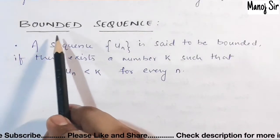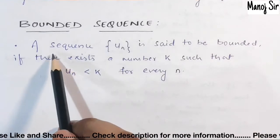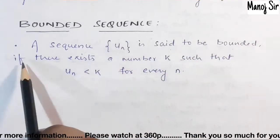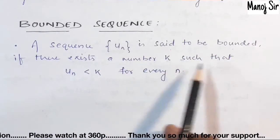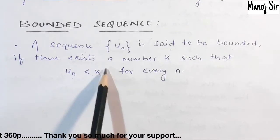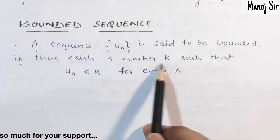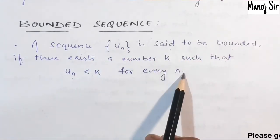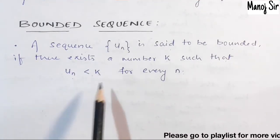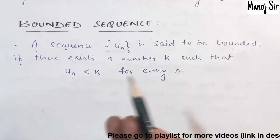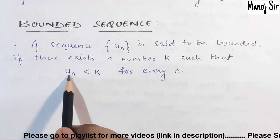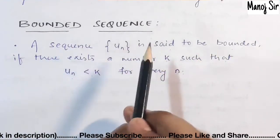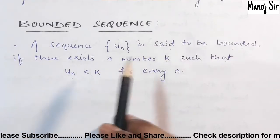Now the next topic is the bounded sequence. A sequence u(n) is said to be bounded if there exists a number k such that u(n) is always less than k for every n. So for every value of n — putting n equals 1, 2, 3, 4 — if the value is always less than k, then that sequence is bounded.